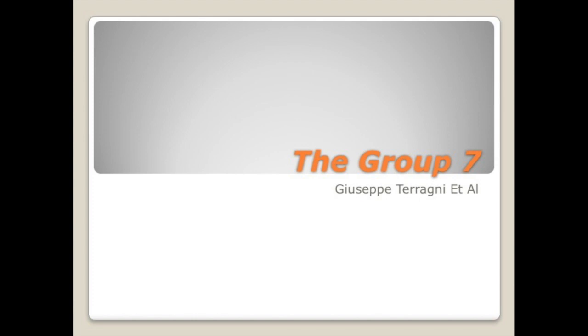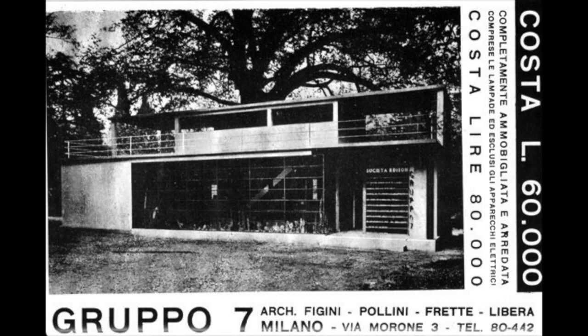In 1926, Terragni and a couple of his colleagues coming out of Milan Polytechnic founded a group known as Group 7 or Group 07. These architects were about moving Italy away from its traditionalism and revival styles — revivals of classical, revivals of Baroque. What they advocated instead was rationalism in architecture. They embraced the machine, coming off the legacy of the futurists, and were really pushing the envelope towards modernism.